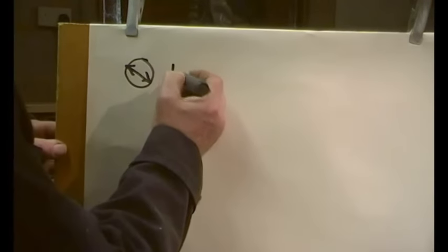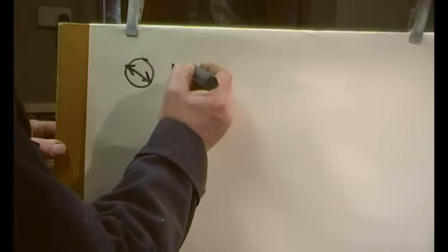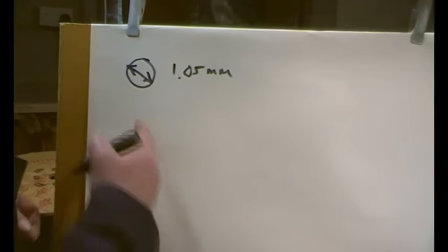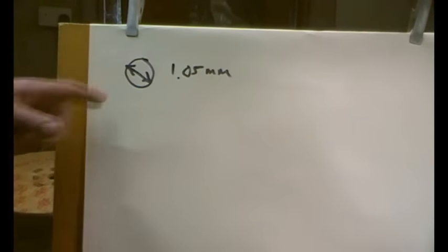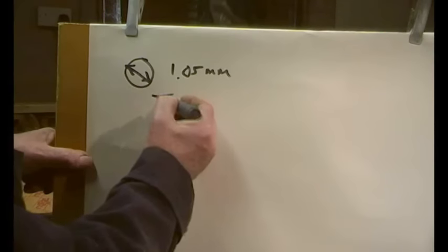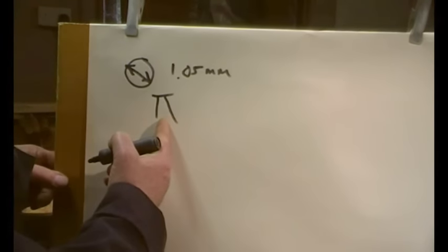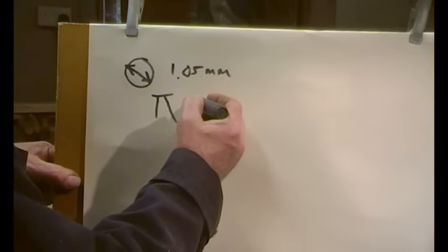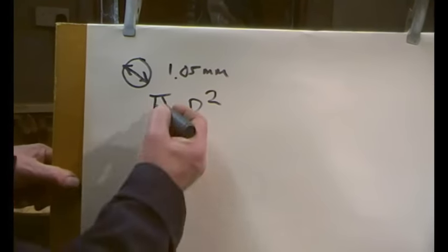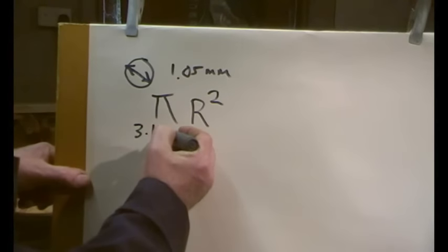So let's just work this out. The diameter is an average of about one point oh five millimeters. Now, to get the area of a circle, you need to use a formula, which is pi. And don't worry about that, that's just a constant. Multiplied by the radius, multiplied by itself, and we write that as squared.